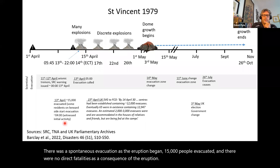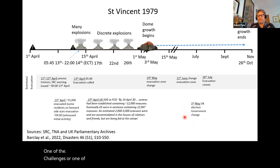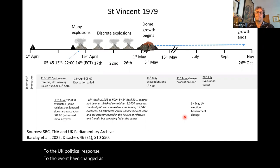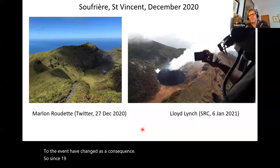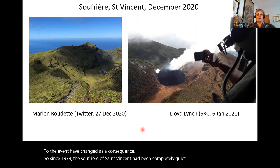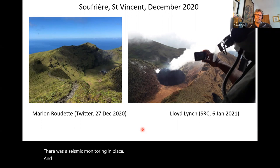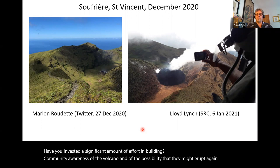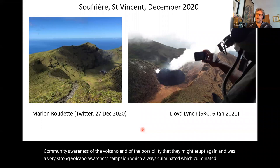One of the interesting challenges in terms of the response was that in the UK there was a change of government after the eruption, so there's quite an interesting story about how the UK political response to the event changed as a consequence. Since 1979, the Soufrière of St. Vincent had been completely quiet, with seismic monitoring in place. Over the last few years in particular, the Seismic Research Center team invested significant effort in building community awareness of the volcano and the possibility that it might erupt again, with a strong volcano awareness campaign culminating in a volcano awareness week each year.